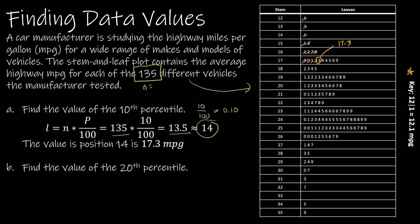Now what does that mean? That means 17.3 is greater than or equal to 10% of our data. If you look at the data we have here, that makes sense that 10% is here, which leaves the other 90% here.